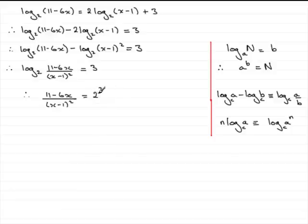Now 2 cubed is 8 and what I'm going to do is multiply both sides by x minus 1 all squared. So therefore we end up with 11 minus 6x equals 8 times x minus 1 all squared.